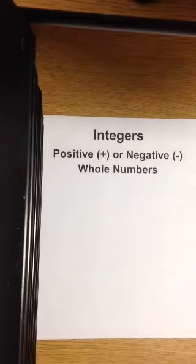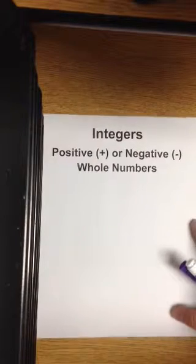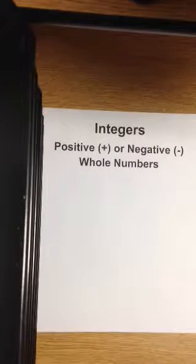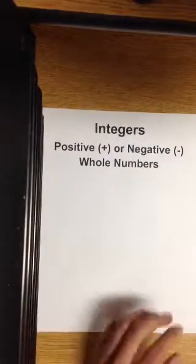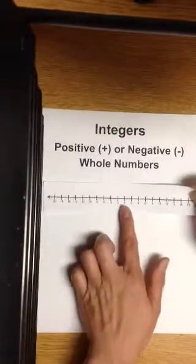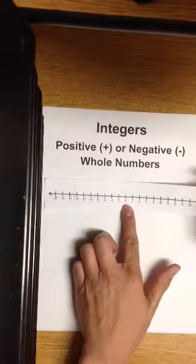Integers are positive or negative whole numbers. So you have a number, it might be positive or negative. In this number line right here, zero is neutral. It doesn't have a side, is neither positive or negative.